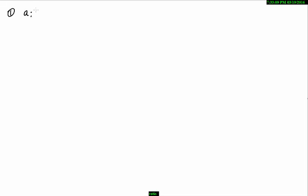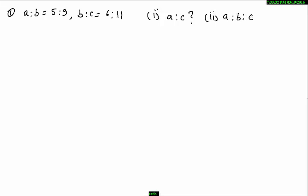Alright, let's start with ratio problems. First question: if A to B is equal to 5 to 9 and B to C is equal to 6 to 11, we need to find A to C. The second question would be A to B to C. Now, A by B is equal to 5 by 9 and B by C is equal to 6 upon 11, but we need to find A to C.